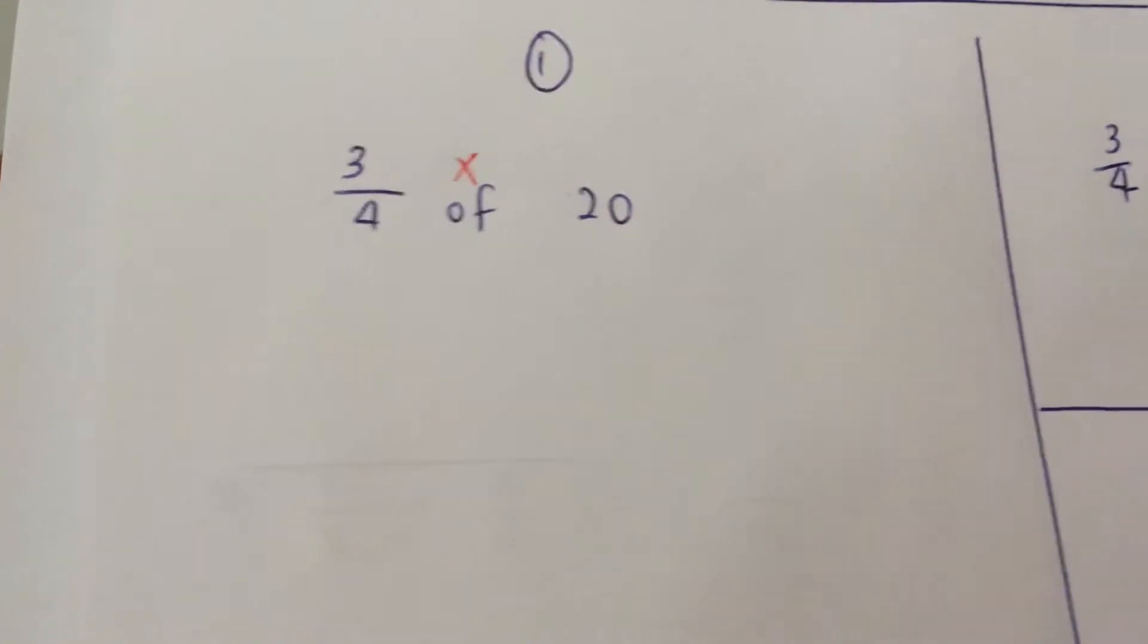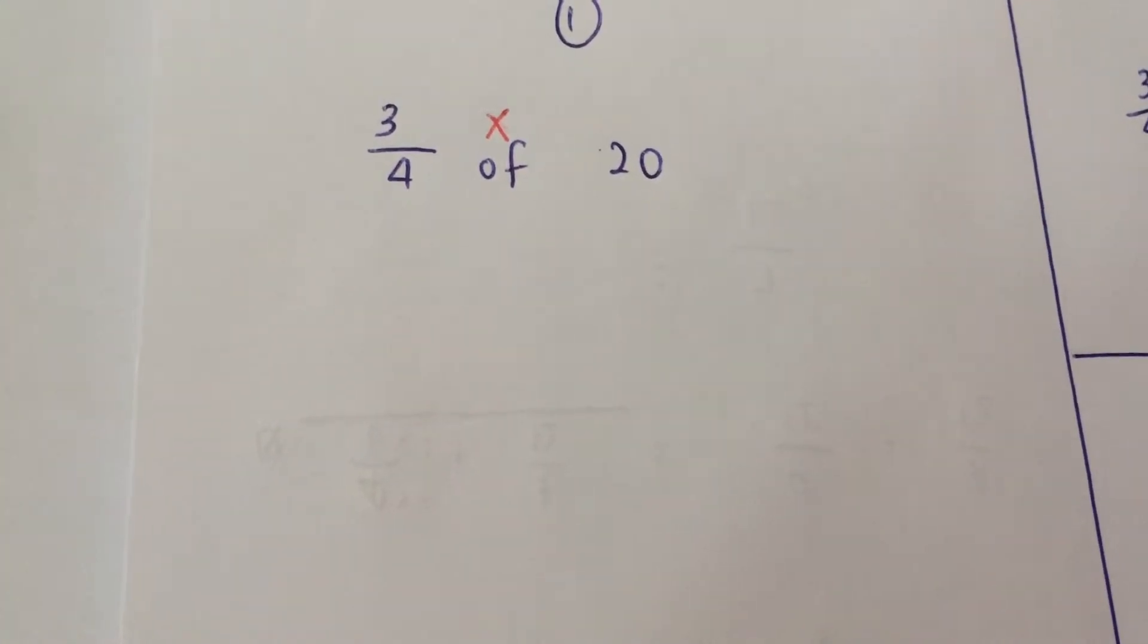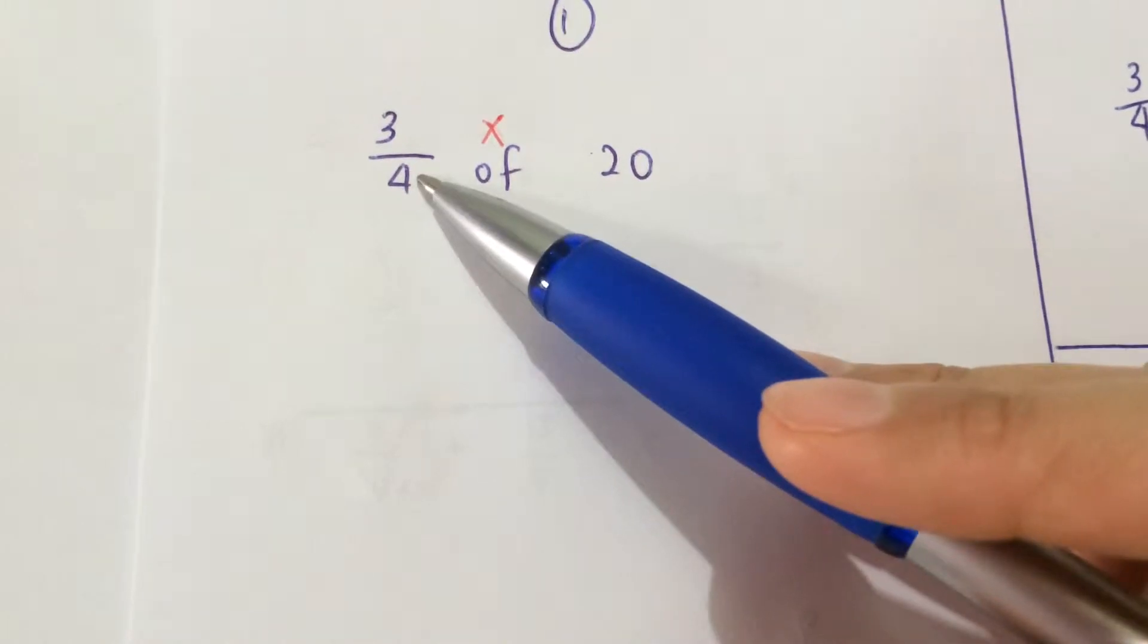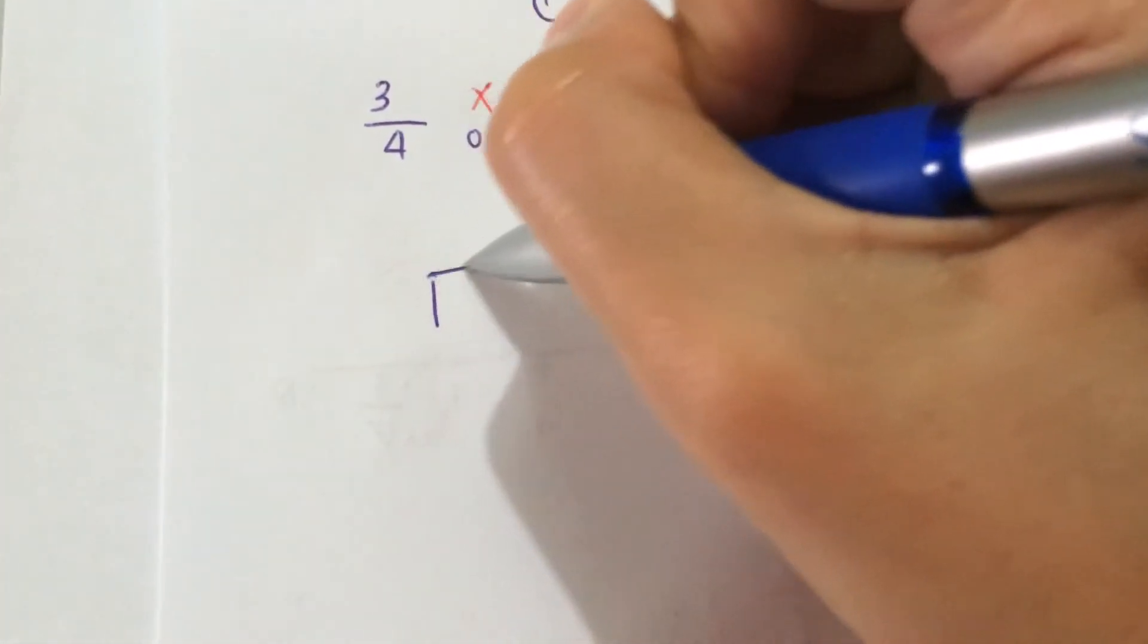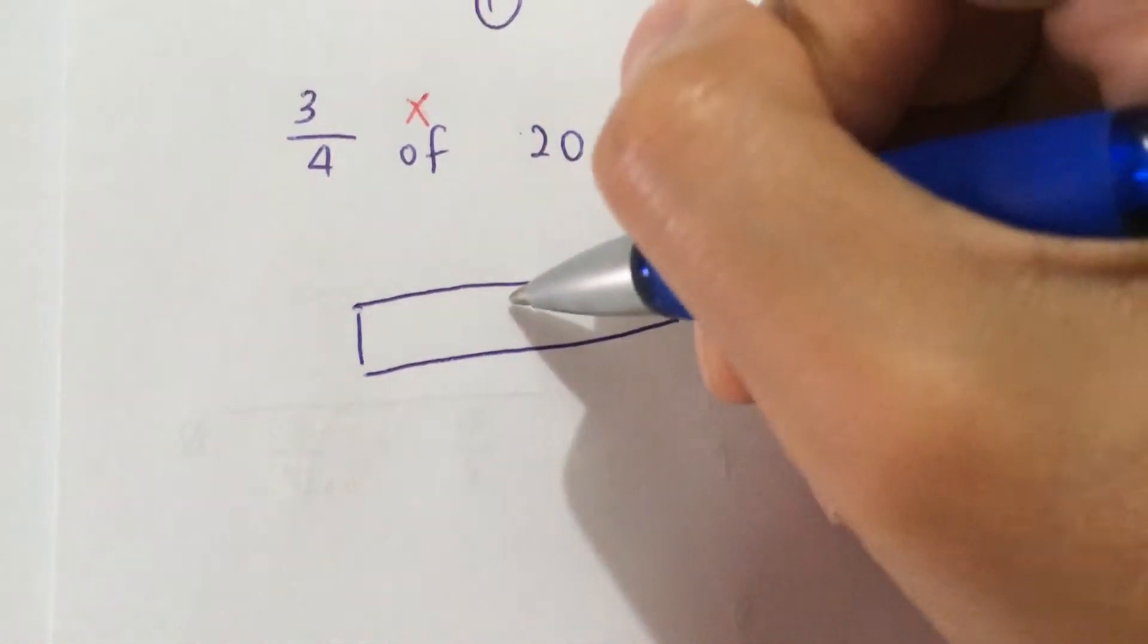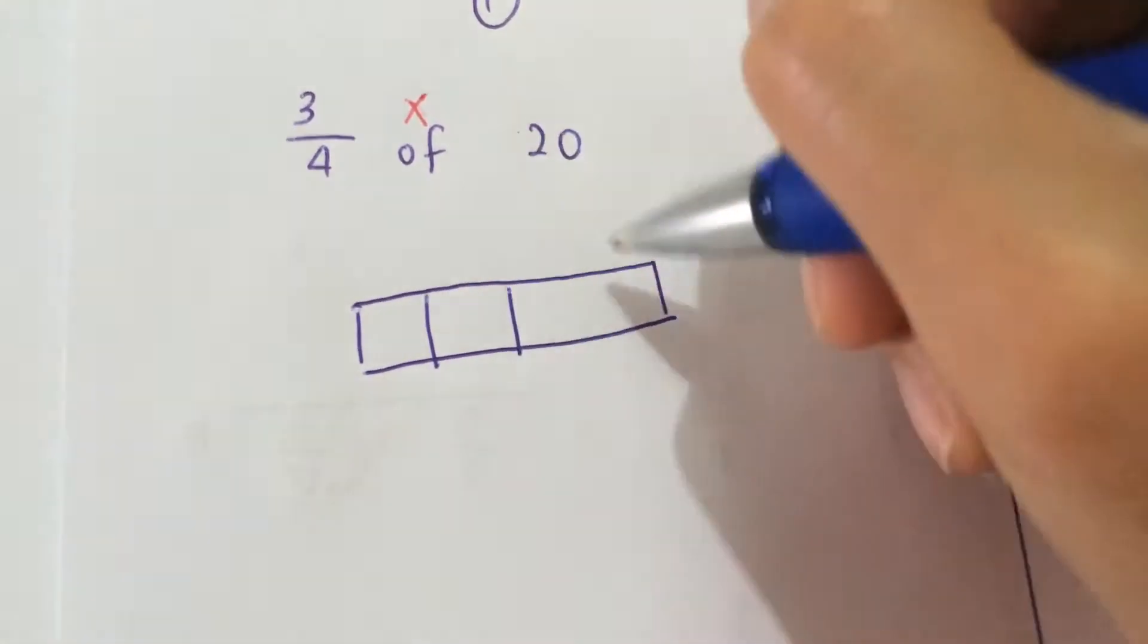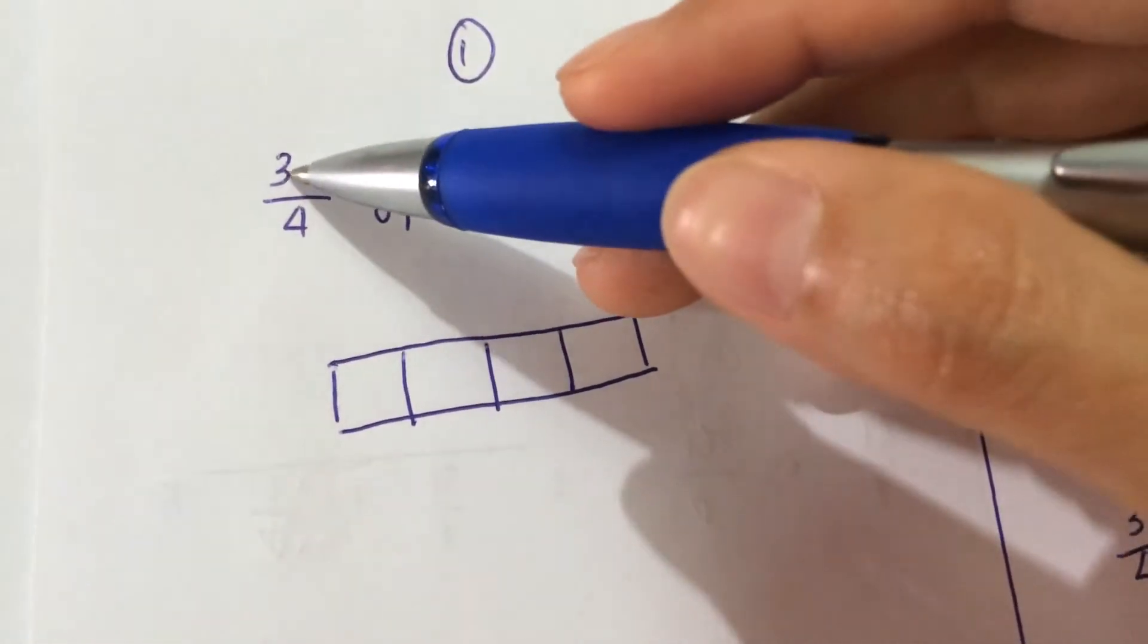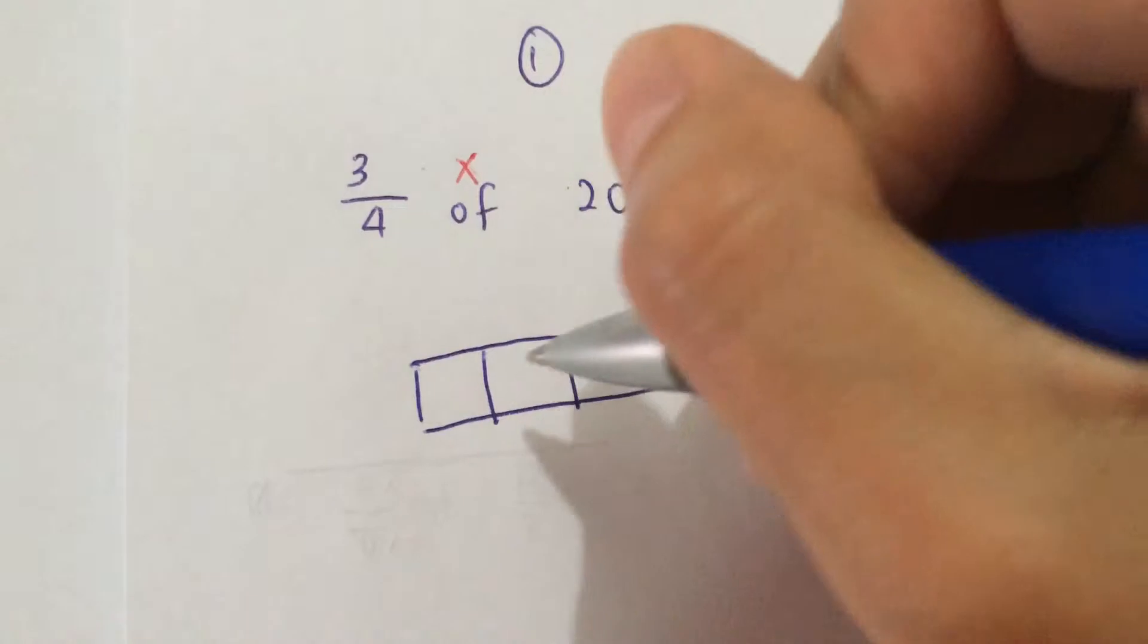The first method is to draw a model. You have a denominator of 4, which means that you have 4 total parts. The numerator is 3, so you shade 3 parts.